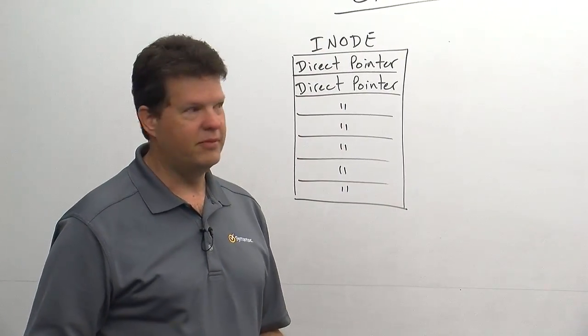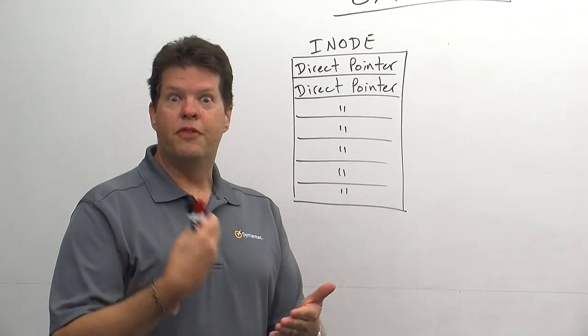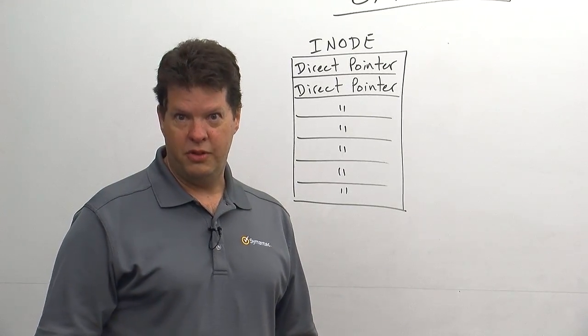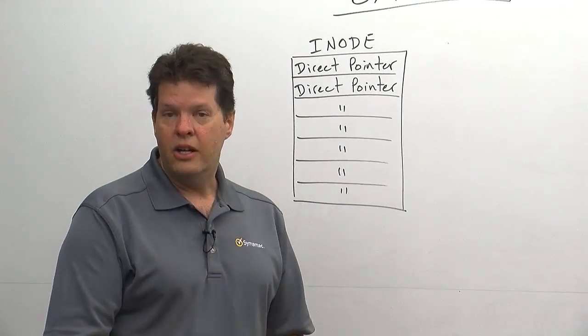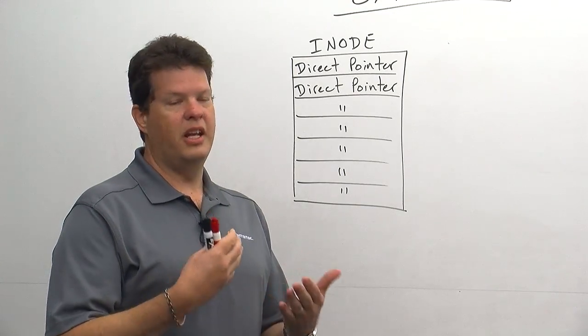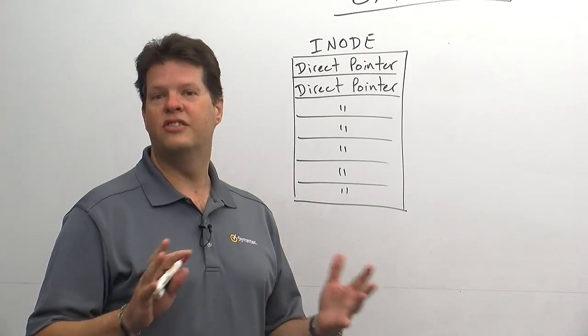So whenever a file is created, there's a lot of system overhead. It's all metadata changes. Free disk blocks need to be allocated to the file. There has to be an inode assigned to the file. There's got to be an update to the directory tables. Lots of stuff that happens.